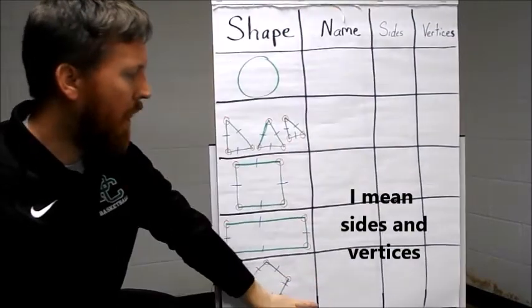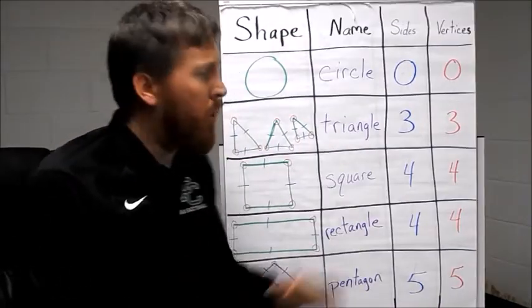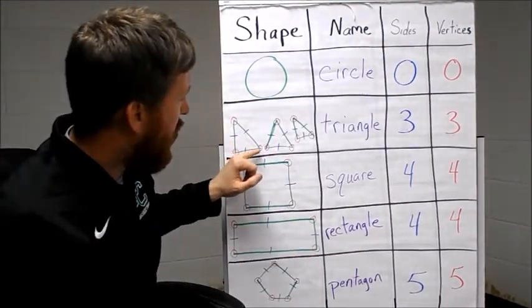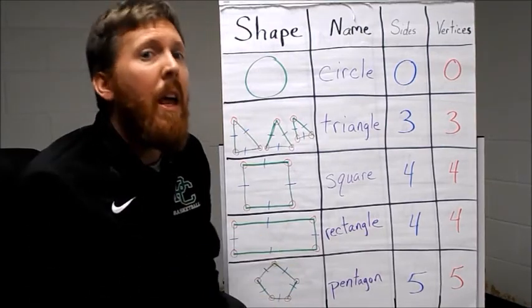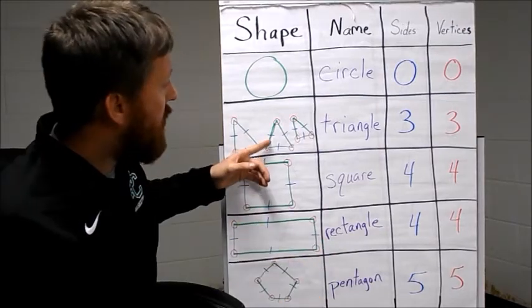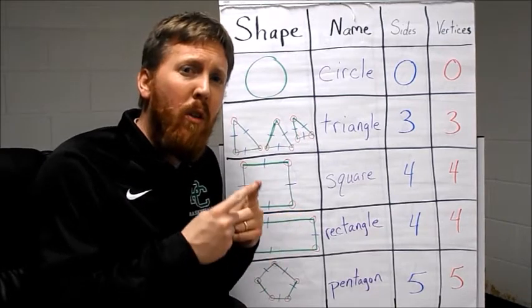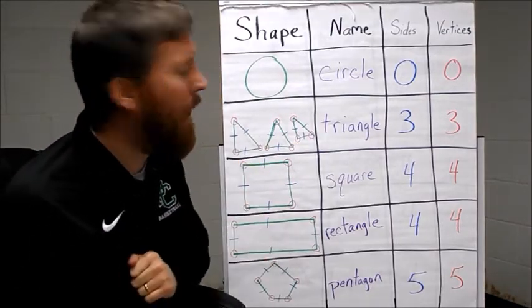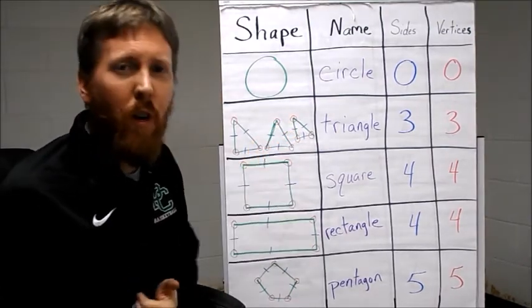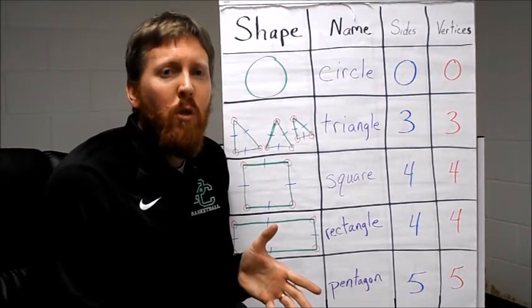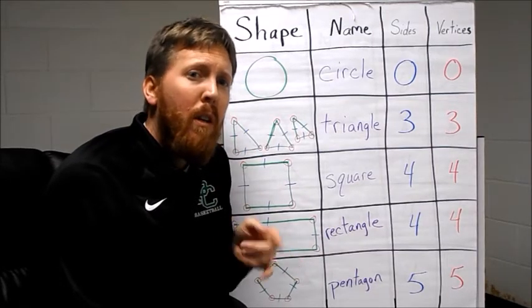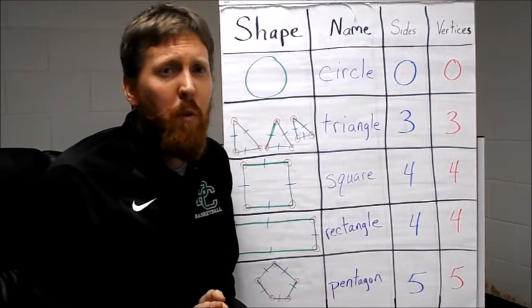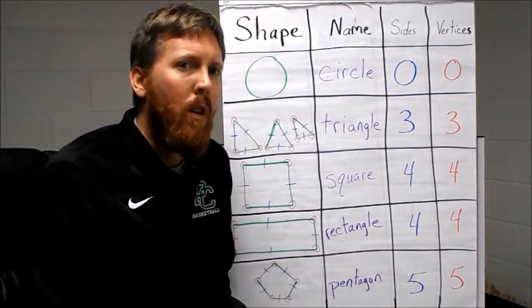Let's talk about edges and vertices. I've finished up our chart. I've got our shapes in green; the vertices are circled in red. Vertices you can think of as points. The sides are marked in blue. Where two sides come together to form a point or a vertex, that creates what we call an angle. The nice thing about two-dimensional shapes is that the number of sides, the number of vertices, and the number of angles are always the same.